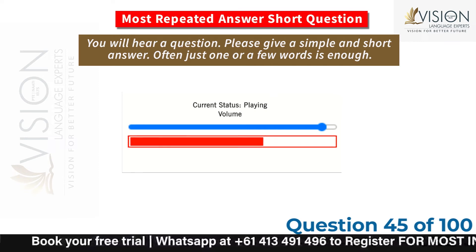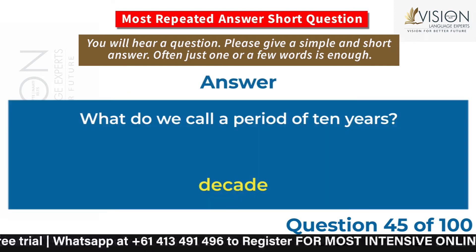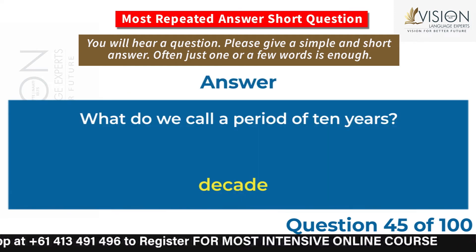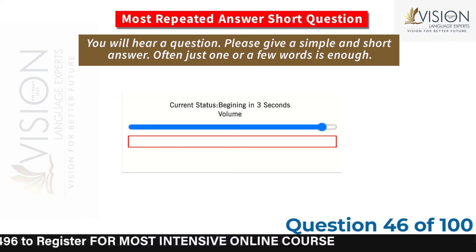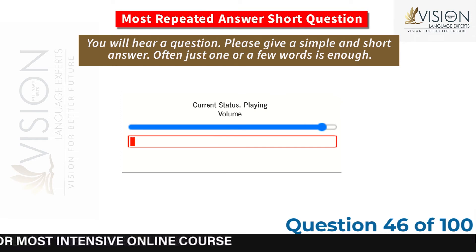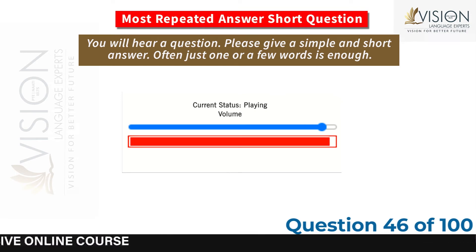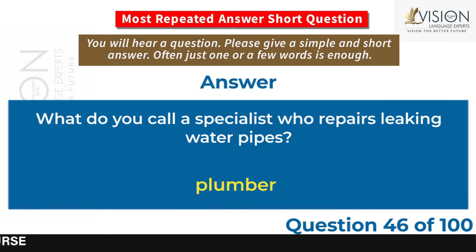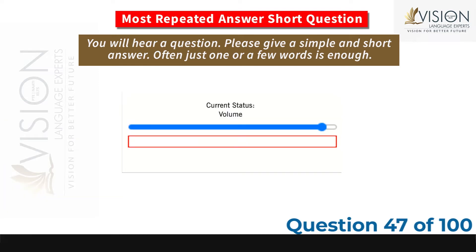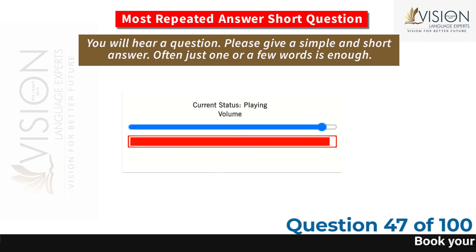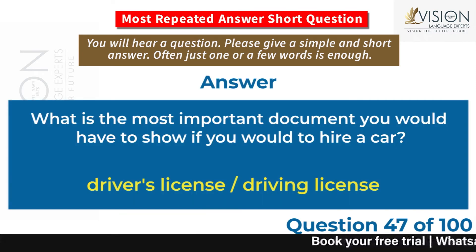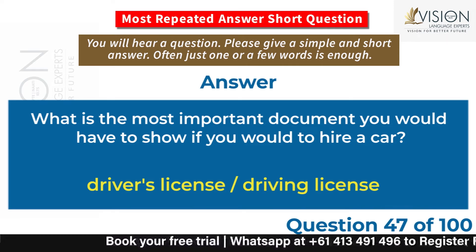What do we call a period of 10 years? Decade. What do you call a specialist who repairs leaking water pipes? Plumber. What is the most important document you would have to show if you were to hire a car? Driver's license, driving license.